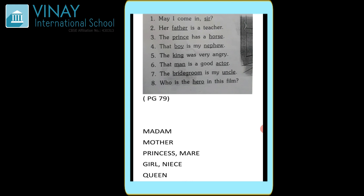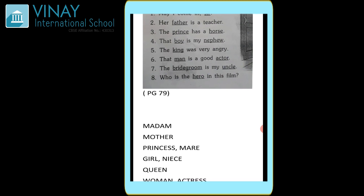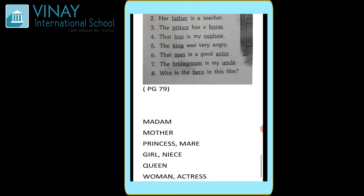The first question is 'May I come in, sir?' — yaha pe underline word kya hai — sir. Toh sir ka opposite gender ho jaega madam. Second is 'Her father is a teacher' — yaha pe underline word is father, that is papa. Toh father ka ho jaega mother, mummy. Third is 'The prince has a horse' — yaha pe do underline words hai, prince and horse. Prince ka opposite gender ho jaega princess, horse ka opposite gender ho jaega mare. Fourth: 'That boy is my nephew' — again boy and nephew, two underlined words. Boy ka opposite gender ho jaega girl. Nephew — that is bhatija — uska opposite gender ho jaega niece, bhatiji.